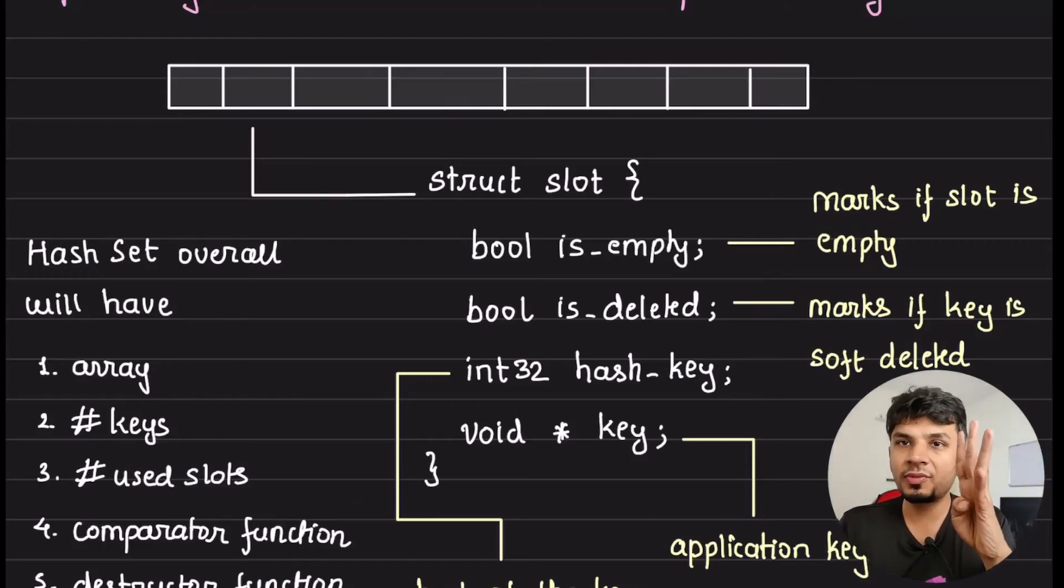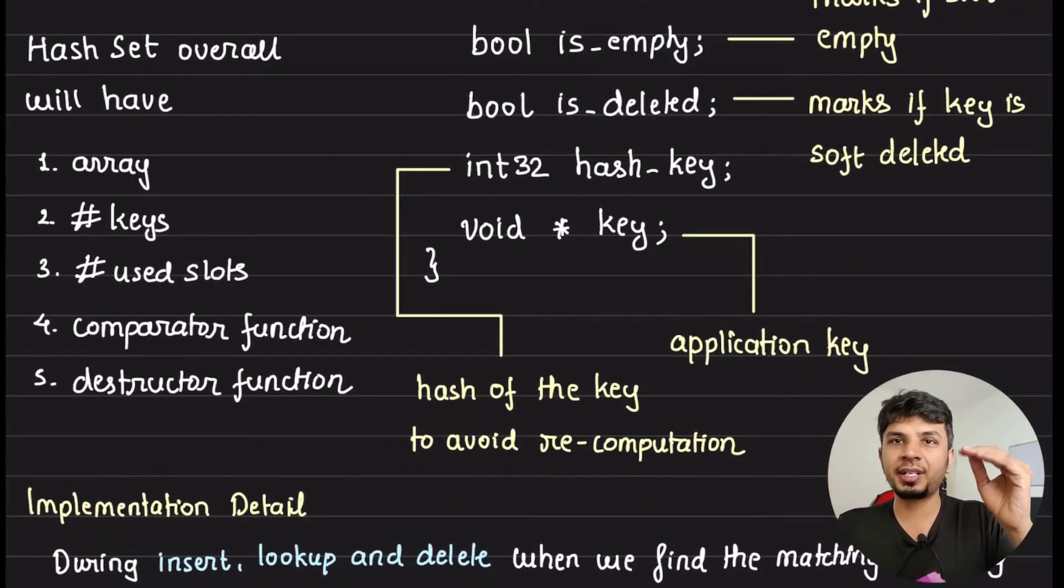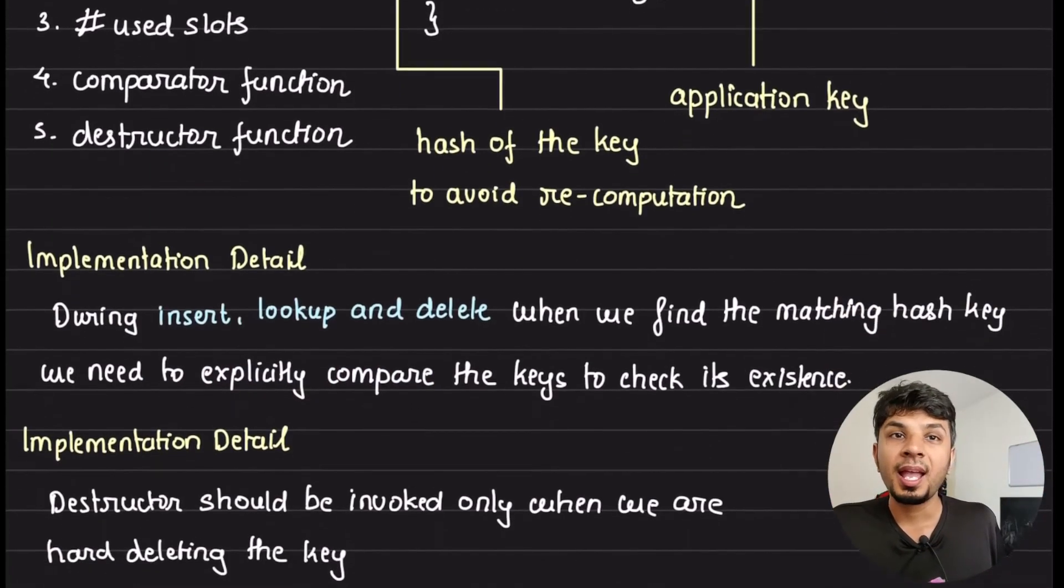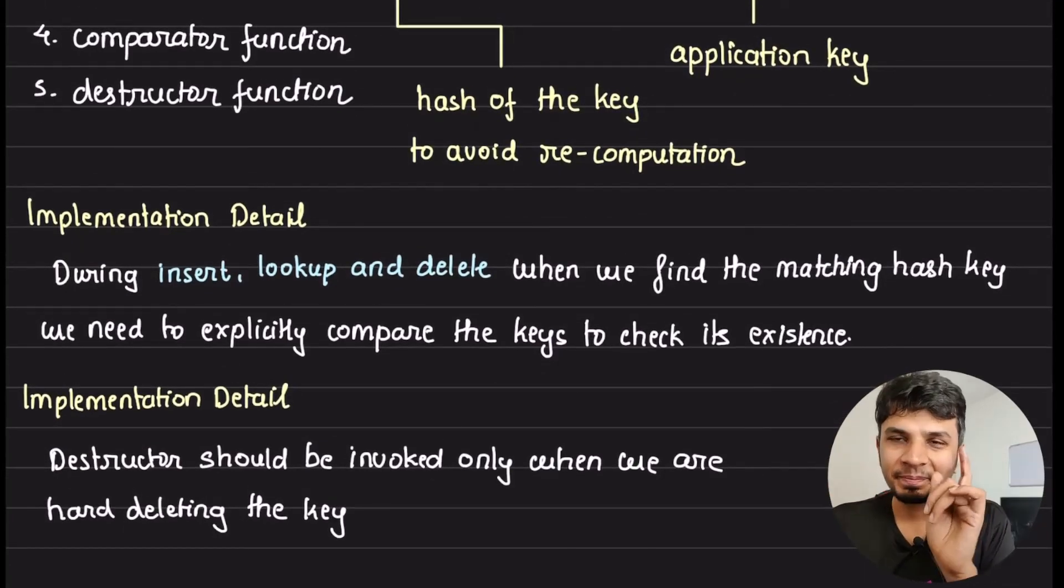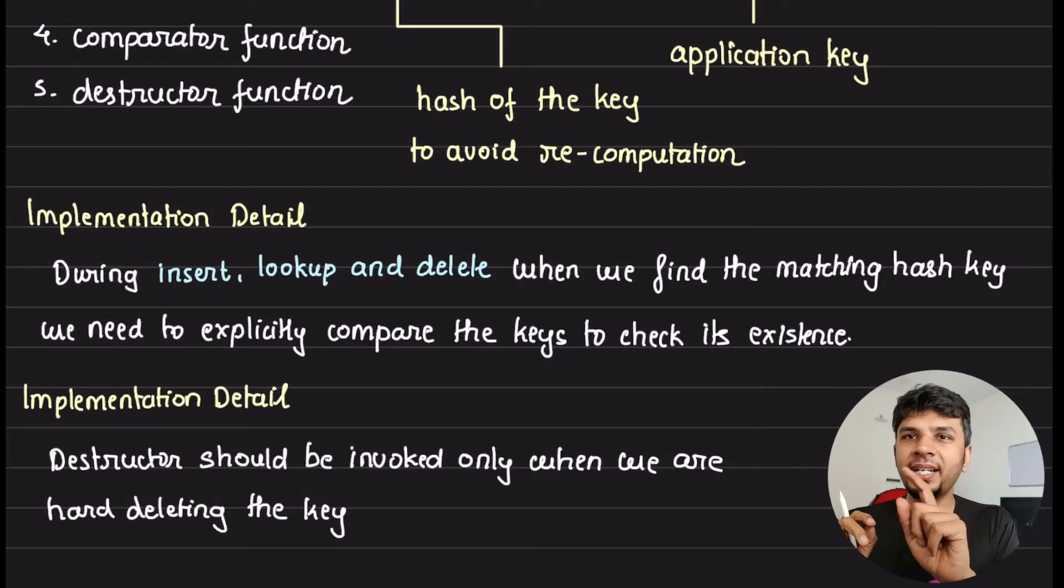Now each struct or each element of this array would be a struct, say slot, which holds four information: first is empty, which tells if the particular slot is empty or not. Second is deleted, which would tell if the slot is soft deleted or not. Third, an int32 hash key. Fourth, a void star application key. Again, very similar structure - hash key just to avoid recomputation, and void star key just to ensure that we can accept any particular type.